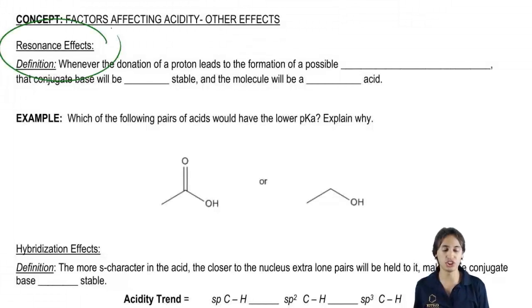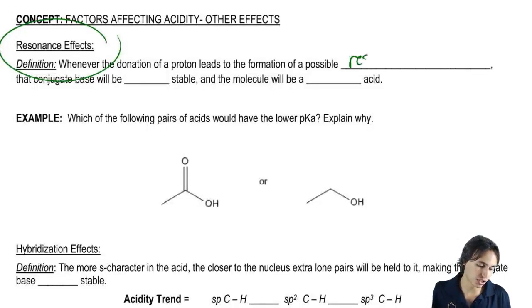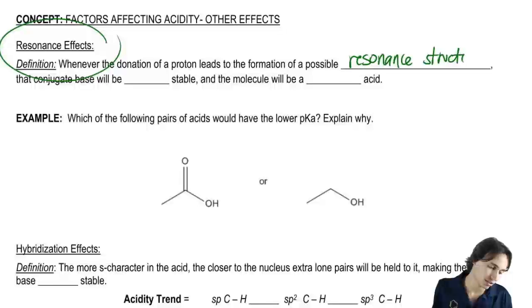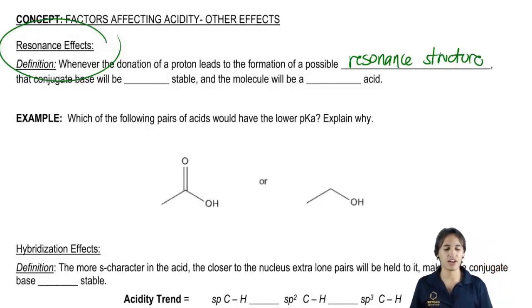Resonance effects is actually just really easy. It's whenever the donation of a proton leads to the formation of a possible resonance structure, that conjugate base will be more stable. The reason the conjugate base will be more stable is because it can resonate. Remember that resonance structures enable for a charge to be in multiple places.